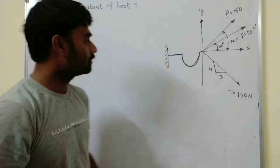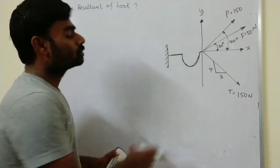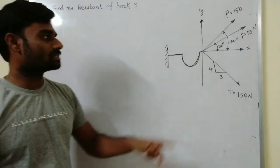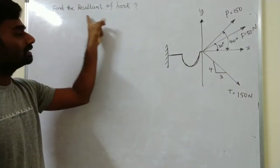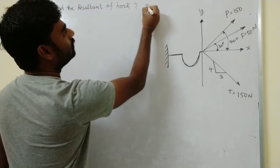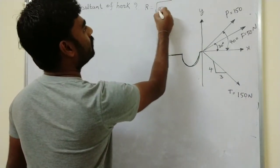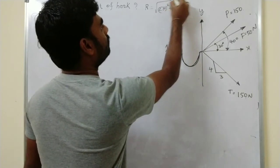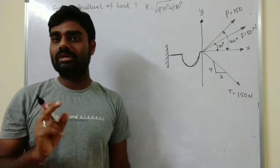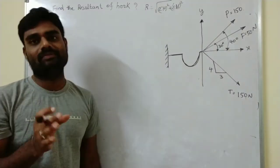This is the next problem on resolution of forces. Find the resultant of the hook portion, which has three cables: T, F, and P. These three cables are connected at the hook. The formula to find the resultant is R = √(ΣH² + ΣV²), where ΣH means the summation of all horizontal forces and ΣV means the summation of all vertical forces.